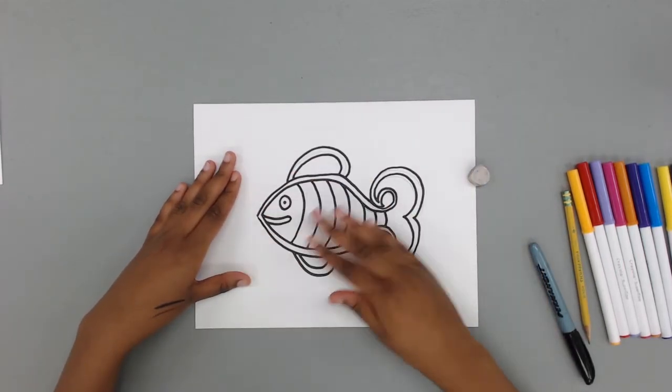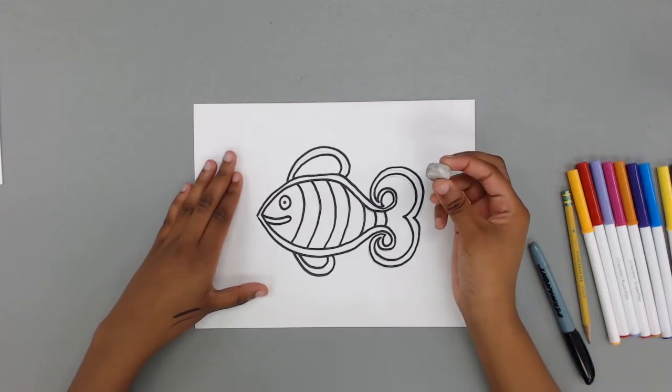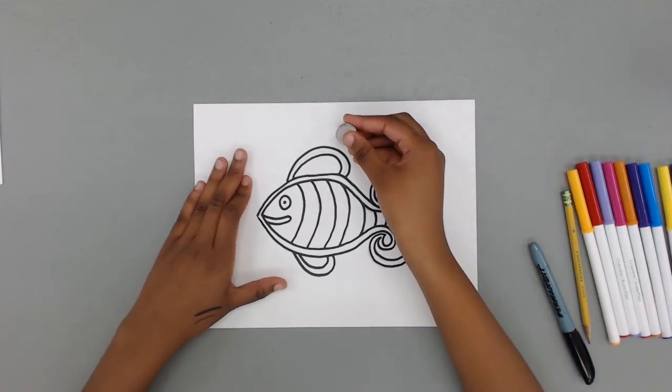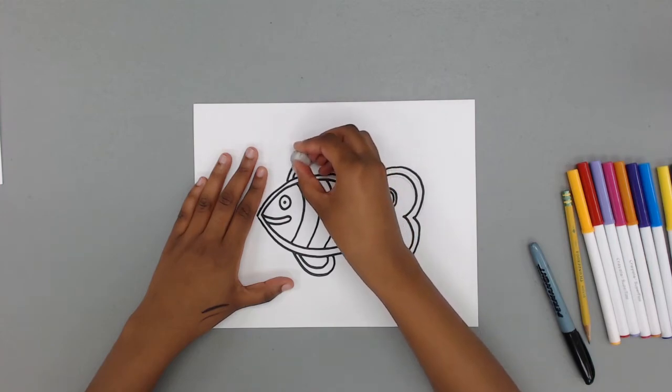Let your ink dry for a moment to avoid smudging and use the eraser to erase any pencil lines that are visible.